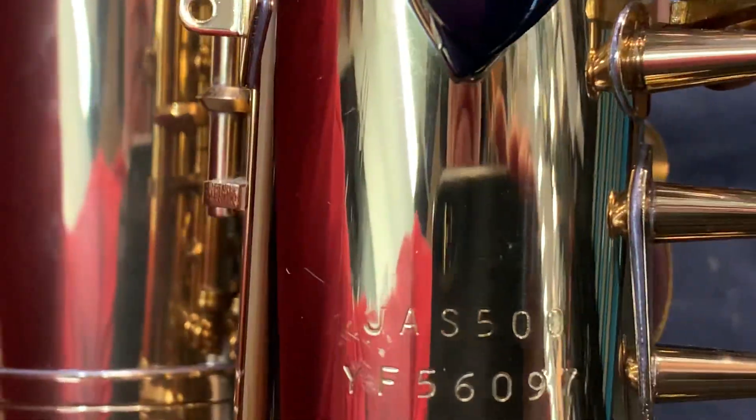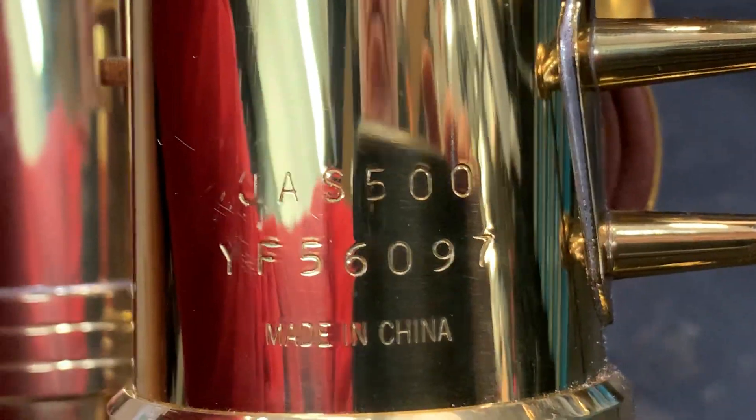We're going to look at a Jupiter Alto Saxophone. Ticket is 6731. It's JS500YF56097.